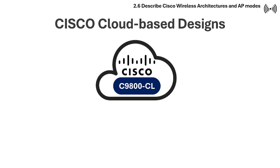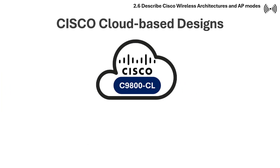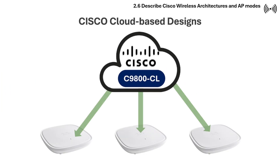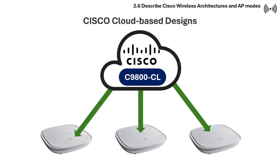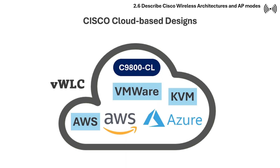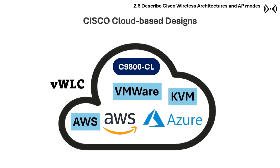The Cisco Catalyst Cloud Controller is designed for cloud deployments. The virtual Catalyst Wireless Controller has a virtual image that can be deployed in a private or public cloud — a cloud-ready virtual WLC running on VMware, ESXi, KVM, or public cloud providers like AWS or Azure.